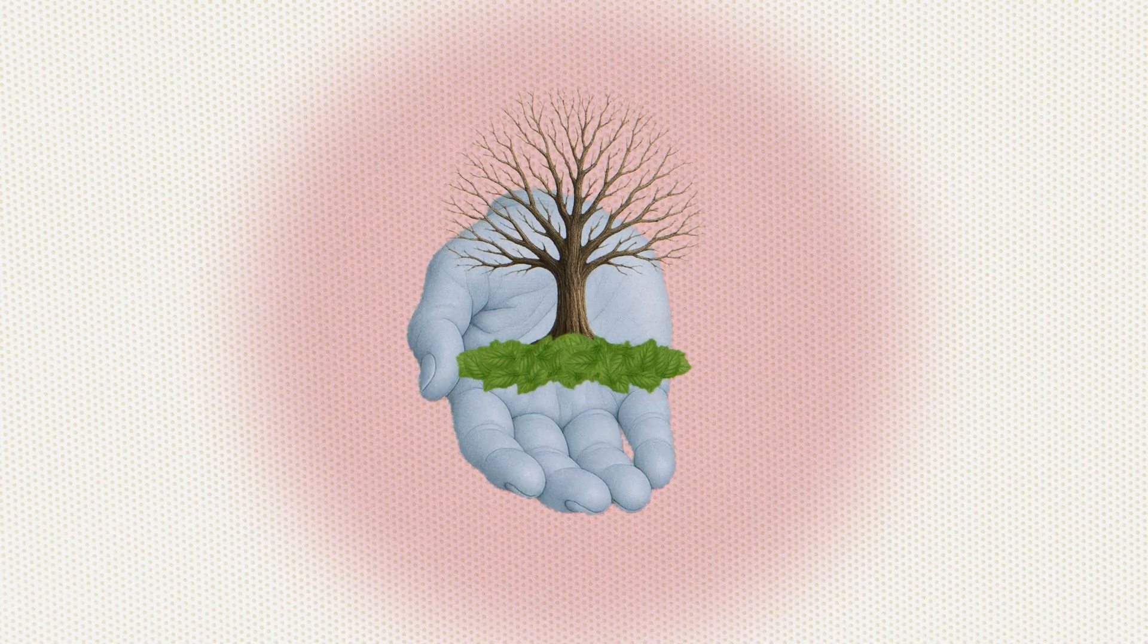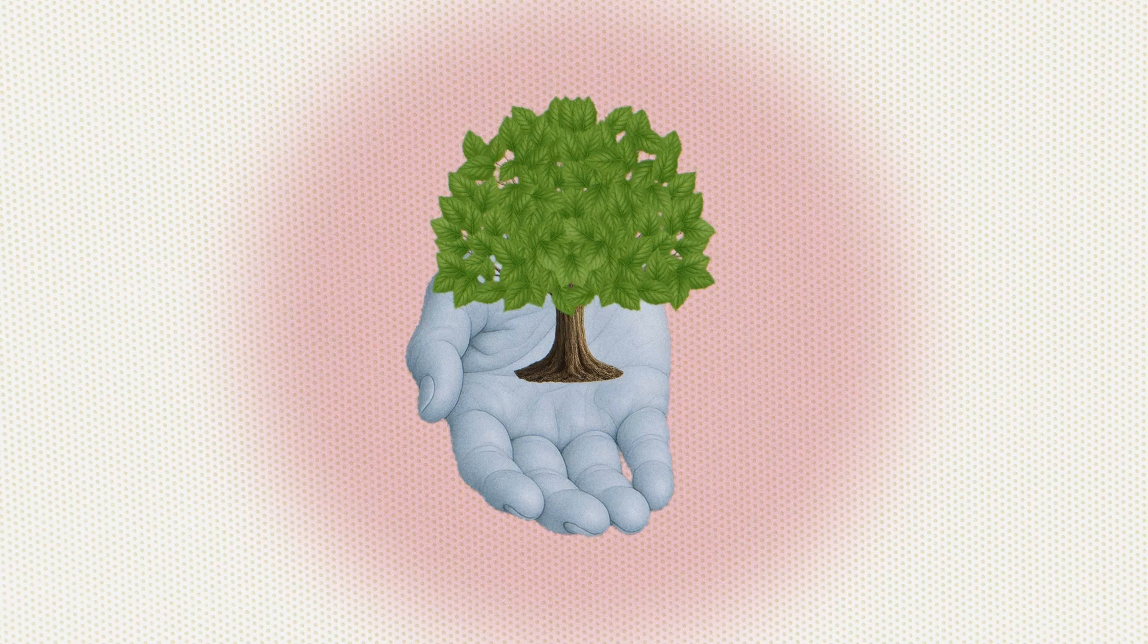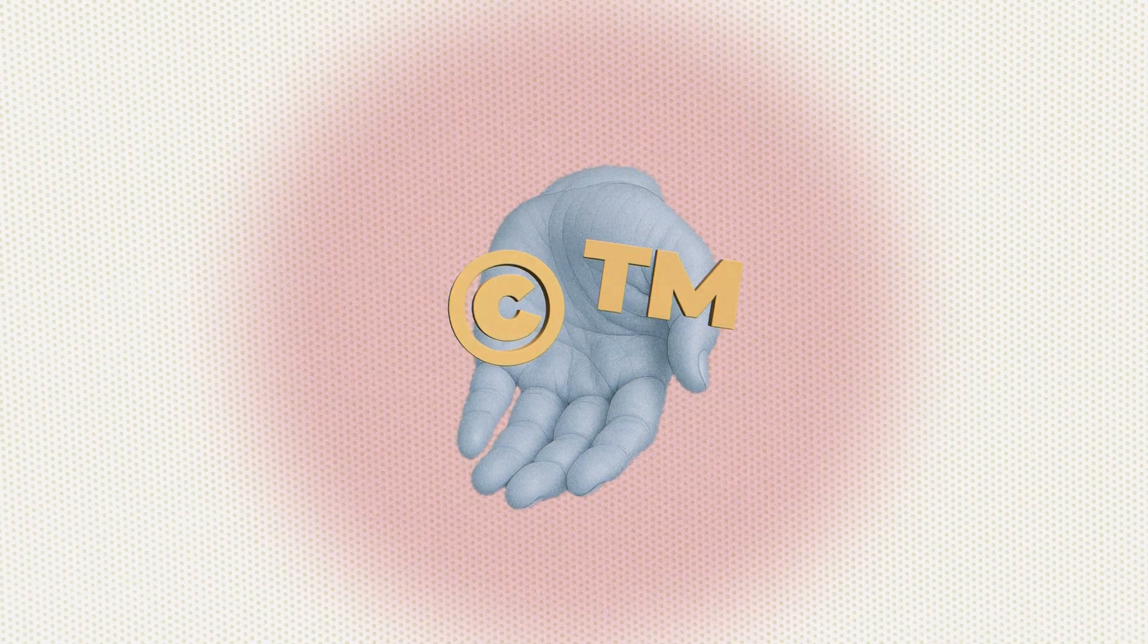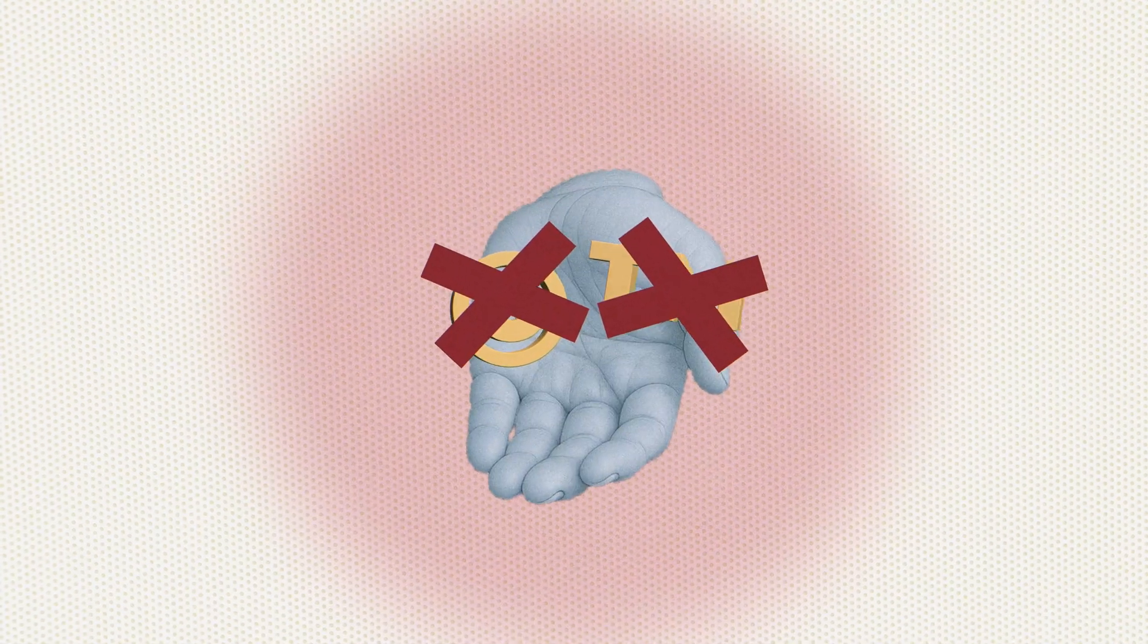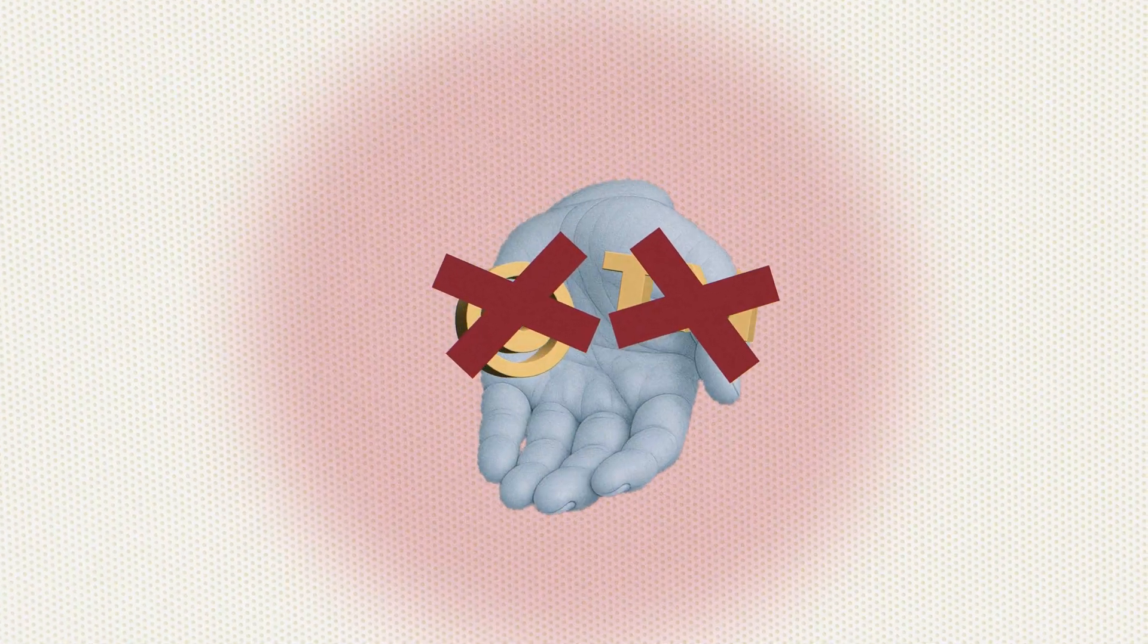That is the first part of my definition: the recycling of resources. That takes me to the second part, which is open flows of information. In the circular economy, it's absolutely crucial to move away from patents and trademarks, because the more we share, the more innovation we have, and the easier it becomes for us to implement the circular economy.